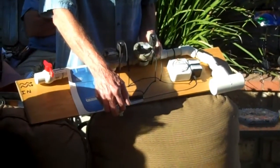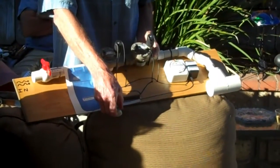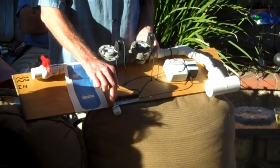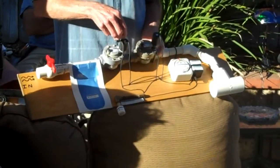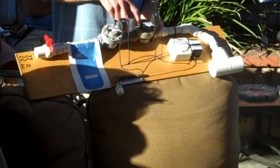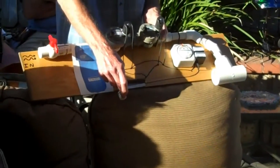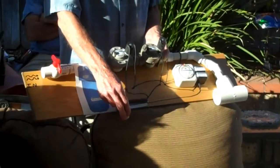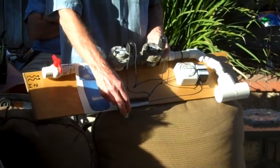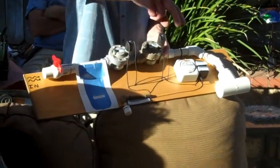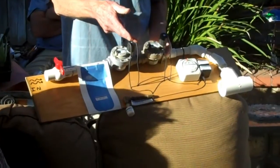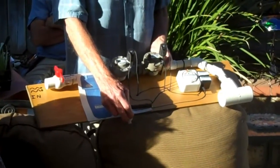And then when the pond gets low, the little float drops down. It closes the switch. And that's the only time these valves can get any power to them to open up. And then as soon as the pond fills up, this float moves up and closes. And so if you have four of these around the pond, they all have to be in the up position.